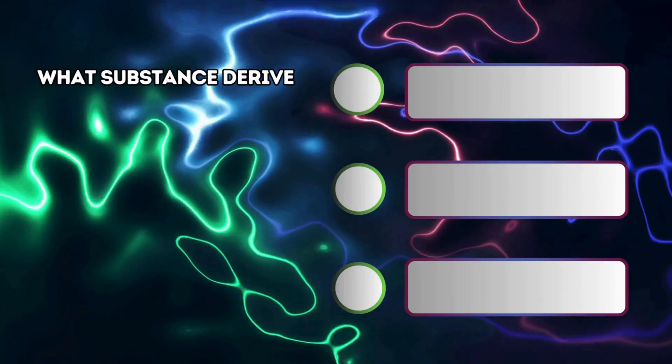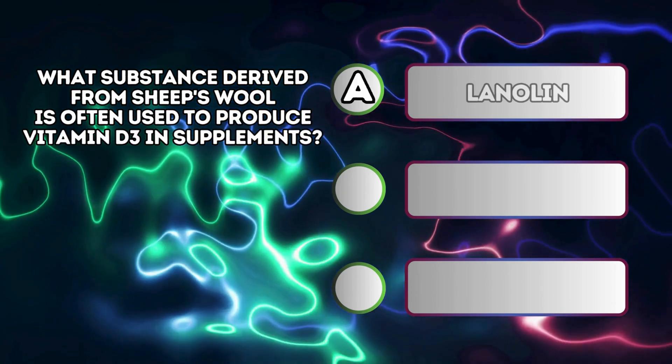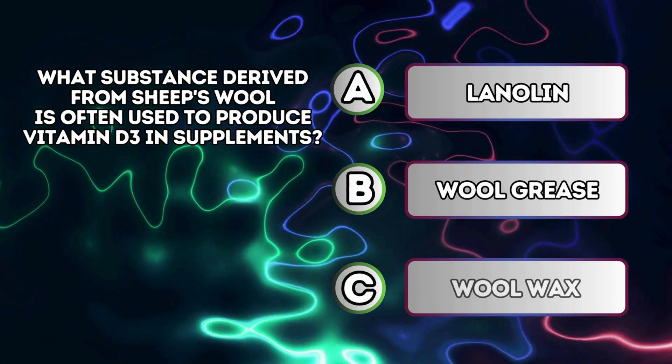What substance derived from sheep's wool is often used to produce vitamin D3 in supplements? A. Lanolin B. Wool grease C. Wool wax